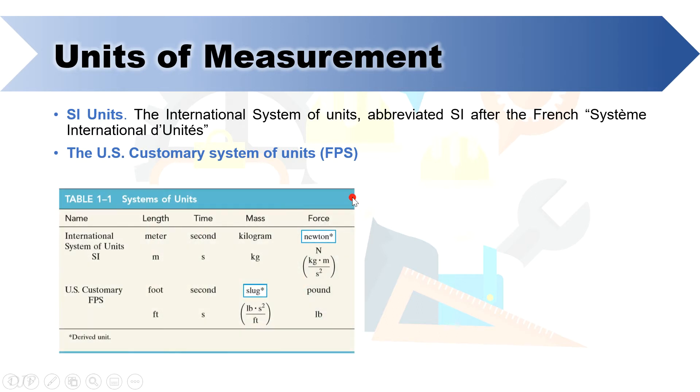Now, the following table shows the comparison between the SI and US system of units. Outlined here are the basic units for each system to be used in mechanics. Take note of the unit of mass and force. For SI, the unit of mass is kilogram, while for the US, it is slug.